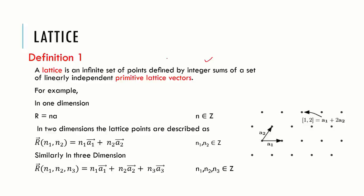The concept of lattice is entirely a geometrical concept and it may be defined mathematically as follows: a lattice is an infinite set of points defined by integer sum of a set of linearly independent primitive lattice vectors.